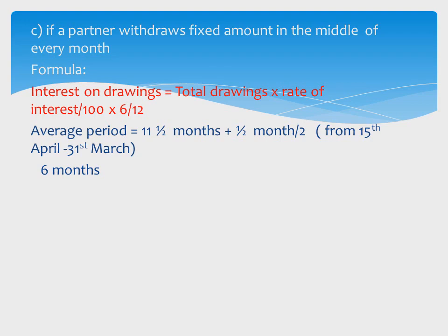How is this calculated? The first drawing is made on the mid of the first month, which is 15th April. From 15th April to 31st March is 11.5 months. The last drawing is made on the mid of the last month, which is 15th March. From 15th March to 31st March is half a month. So (11.5 + 0.5) / 2 = 6 months.